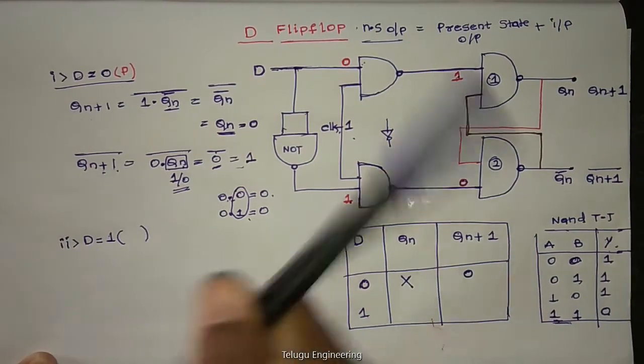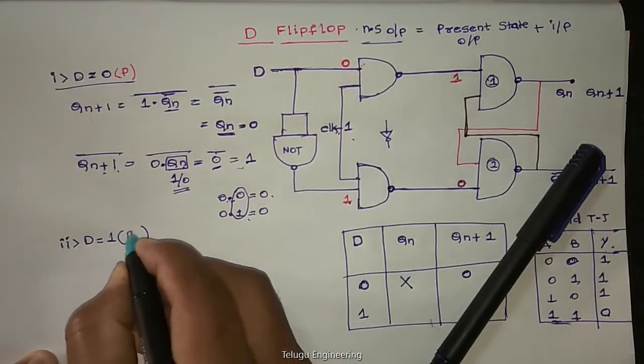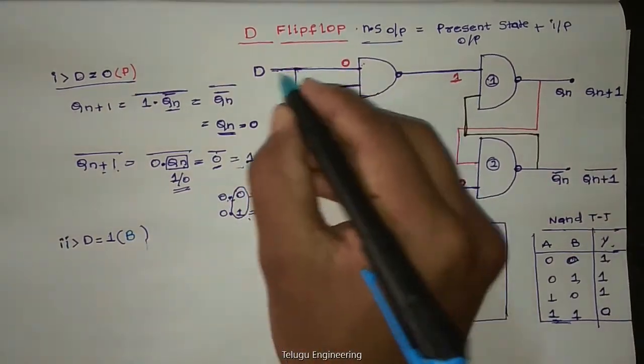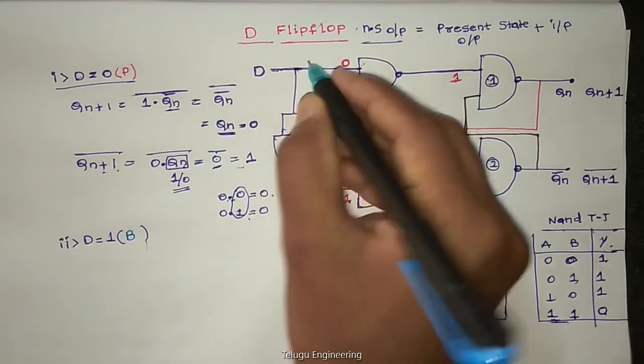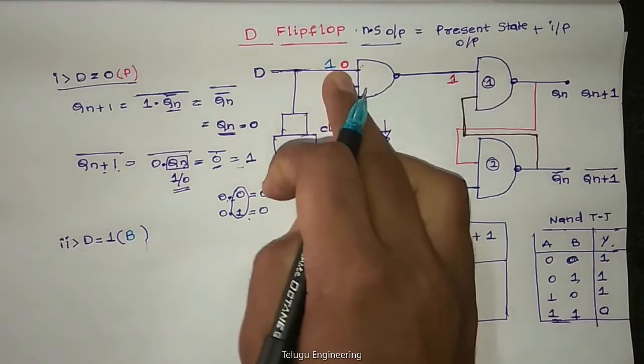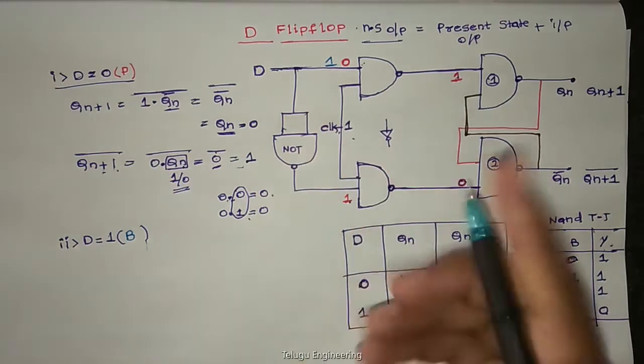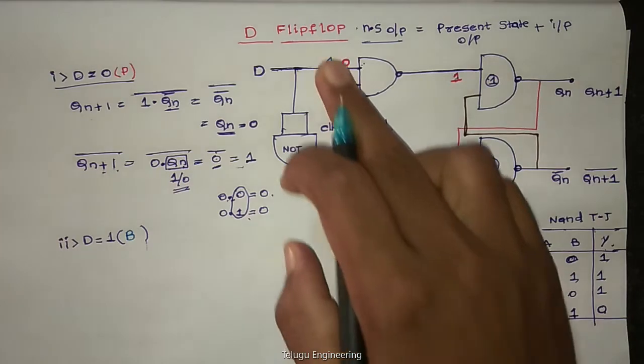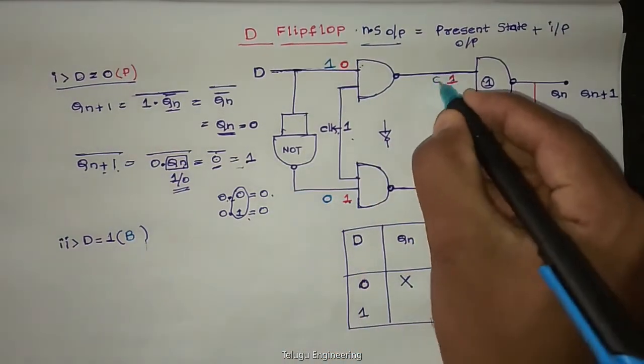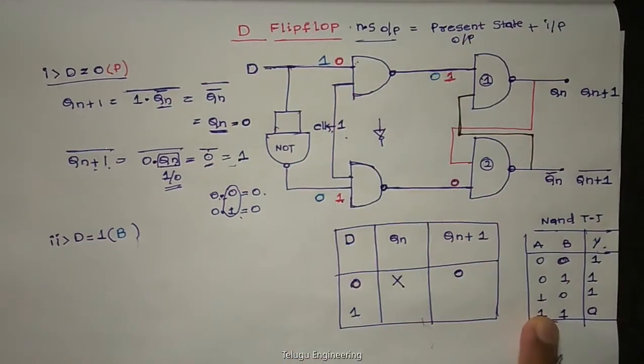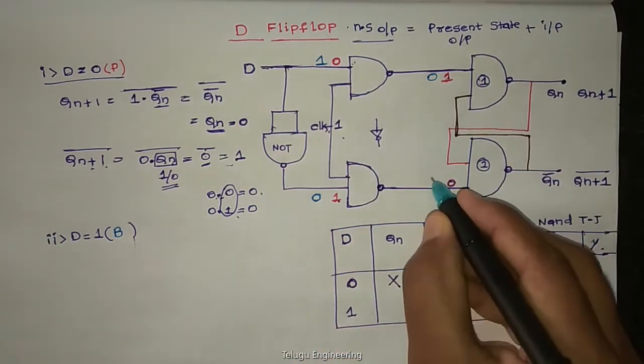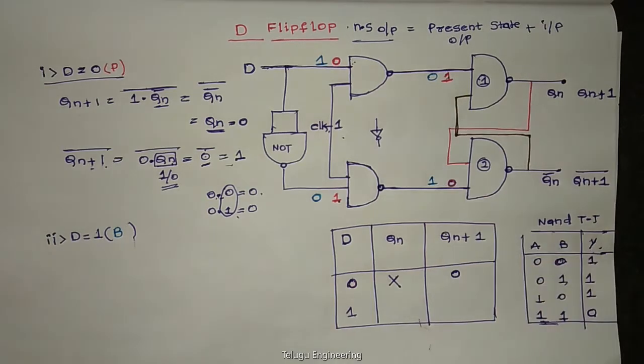Next second one, we keep D equal to 1. Represent with violet or blue. Now if we have 1 here, automatically here 1. Here NOT gate, so here zero. Clock high, high into high zero. NAND gate truth table, so 1 into 1 is 0. Here one input zero, so we can directly write this output as 1. Zero here, 1 here.